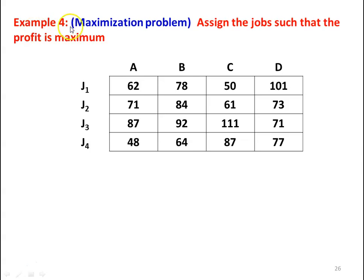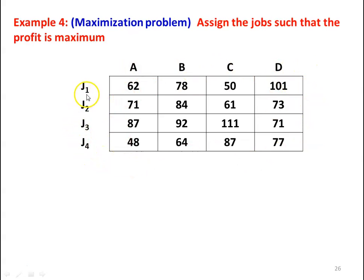We take example number 4 — a maximization type of problem. In the earlier 3 problems we solved minimization type. Now assign jobs to maximize profit. We have 4 jobs J1, J2, J3, J4 and 4 machines A, B, C, D. The profit matrix values are: 62, 78, 50, 101; 71, 84, 61, 73; 87, 92, 111, 71; 48, 64, 87, 77.